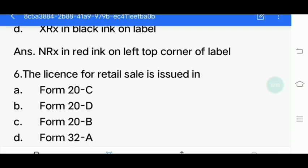Sixth question: The license for retail sale is issued in which form? Options: Form 20C, Form 20D, Form 20B, Form 32A. Answer is Form 20C.